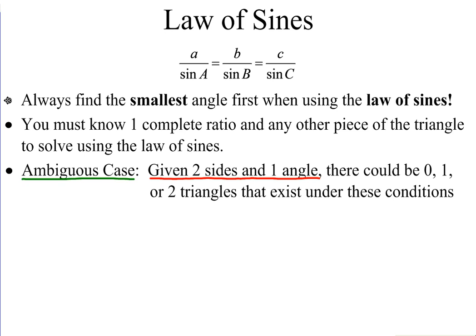A short trick to make solving a little quicker: Law of Sines can also be written as sine A over A equals sine B over B, which equals sine C over C. It's not a big deal if you don't do this, but it will save you a couple of steps and make solving a bit quicker, as you'll see in the examples.